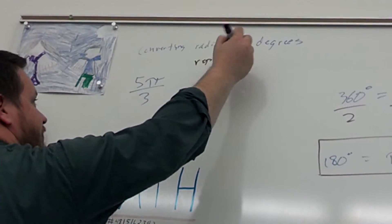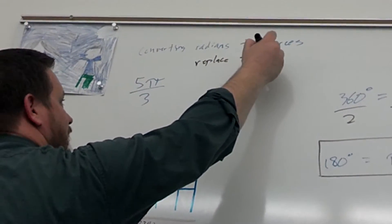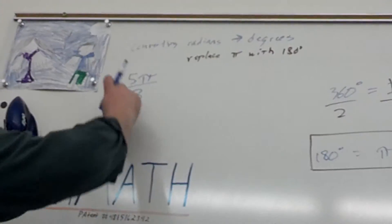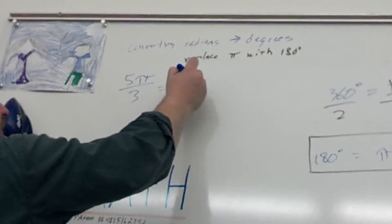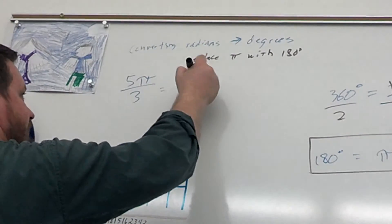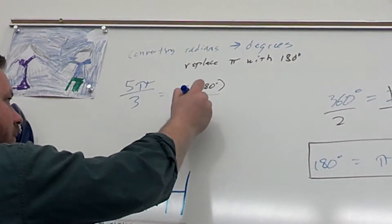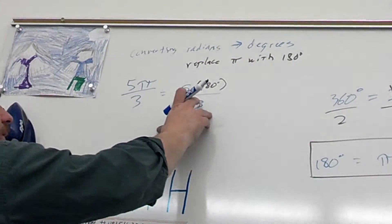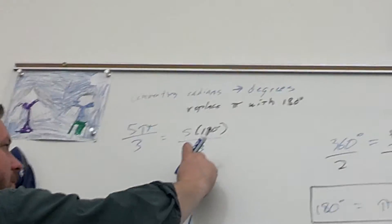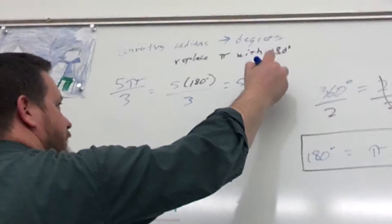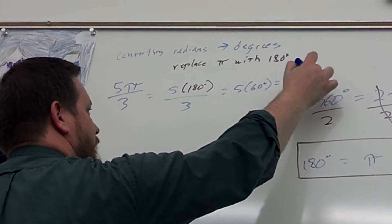When you're converting radians to degrees, replace pi with 180 degrees. So, 5 pi over 3 in radians would be 5 times 180 degrees over 3. What's 180 divided by 3? 60. 60 times 5? 300. 300 degrees.